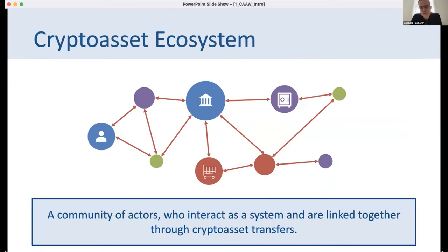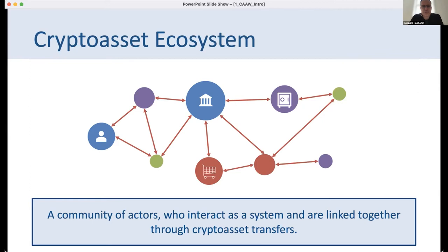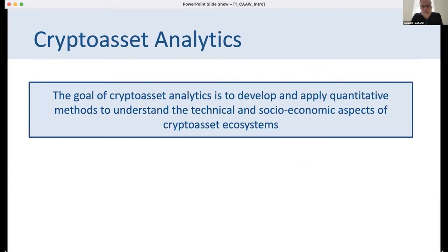We don't conceive crypto assets as isolated atomic units — they are part of a larger ecosystem. Crypto assets are bought and sold at exchanges, used to buy goods and services in legal and illegal marketplaces, and used to speculate. A crypto asset ecosystem is a community of actors who interact as a system and are linked together through crypto asset transfers.